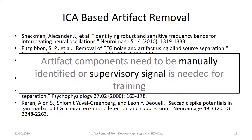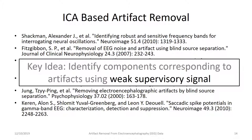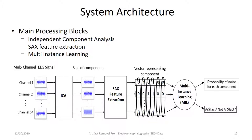There's a ton of work in ICA-based artifact removal, but it's typically done manually with a supervisory signal. You run ICA on the EEG, get all the basis components, then a human expert goes in and identifies which ones are noise. Once you have examples of noise components and clean EEG, you can train a machine learning system to identify them. What we tried to do was use a weak supervisory signal instead.